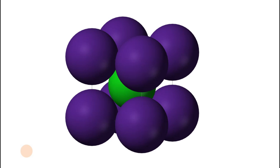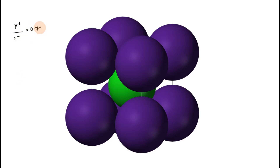In this video, let us speak about the cesium chloride structure. Cesium chloride is an ionic compound in which you have cesium⁺ and Cl⁻. Any ionic compound follows the radius ratio rule — that is, the radius of the cation divided by the radius of the anion. In the case of cesium chloride, the radius ratio falls between 0.732 to 1, which suggests that cesium chloride must be forming a BCC-type crystal — a body-centered cube type crystal.